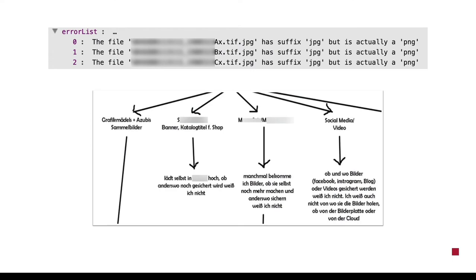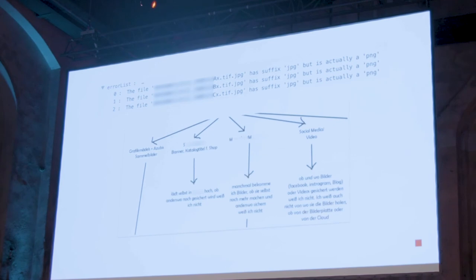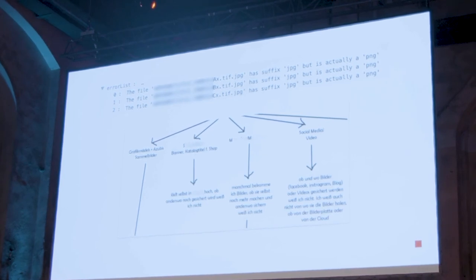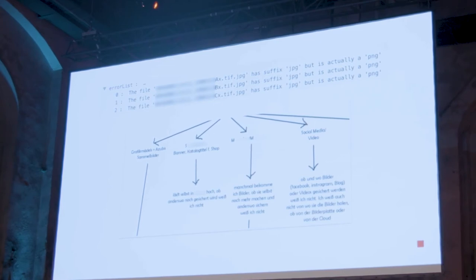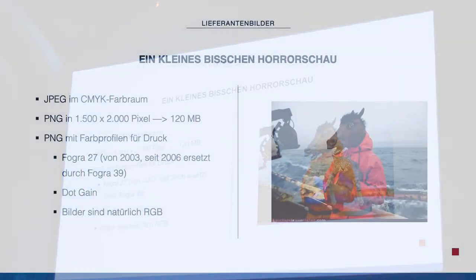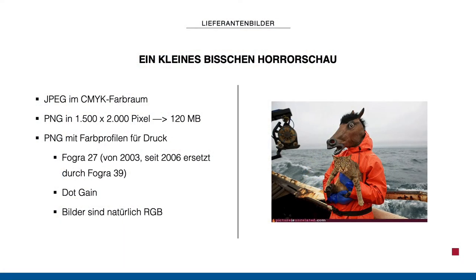This is an extract from an original customer diagram — we blurred the perpetrator. 'At times I get images, but where we save them, I don't know. I don't even know where they come from — maybe from the image plate or maybe from the cloud.' Image plates — who has worked with image plates? Which decade was that? For some it's less than 10 years ago. We get JPEGs because Photoshop can do that, so it must be okay.